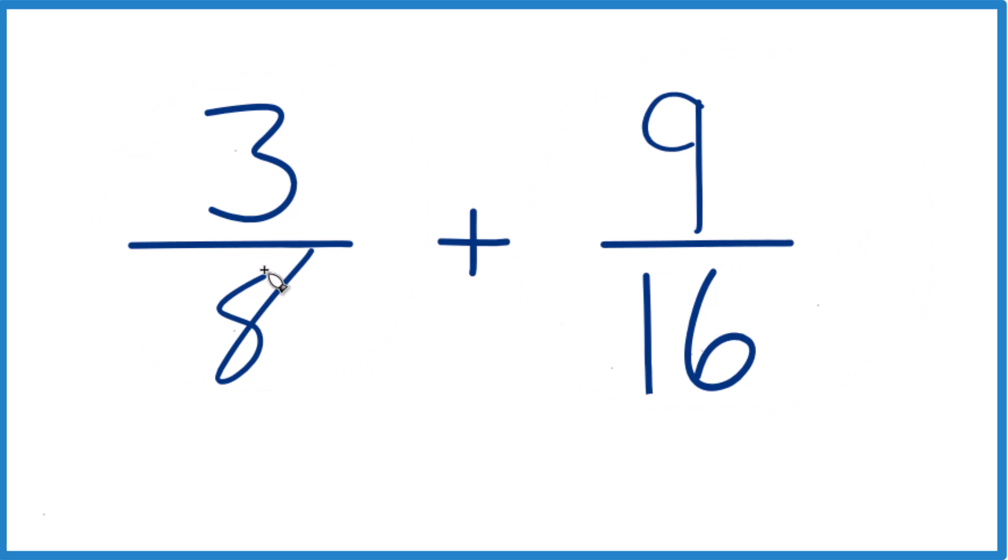When you add fractions, you want to get a common denominator, so we want these numbers to be the same, because if they're the same, we just add the numerators together and then bring that number across, and you got it.